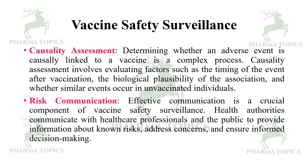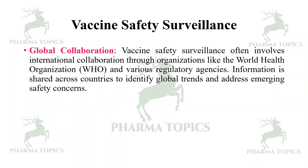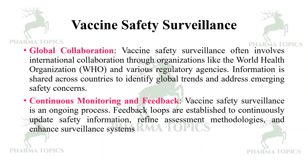Effective communication is a crucial component of vaccine safety surveillance. Health authorities communicate with healthcare professionals and the public to provide information about known risks, address concerns, and ensure informed decision making. Vaccine safety surveillance often involves international collaboration through organizations like the World Health Organization and various regulatory agencies, sharing information across countries to identify global trends and address emerging safety concerns. Feedback loops are established to continuously update safety information, refine assessment methodologies, and enhance surveillance systems.